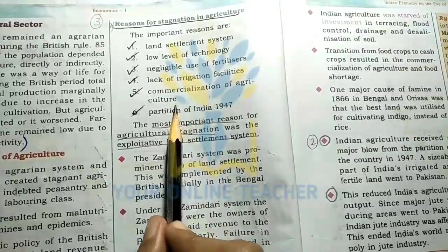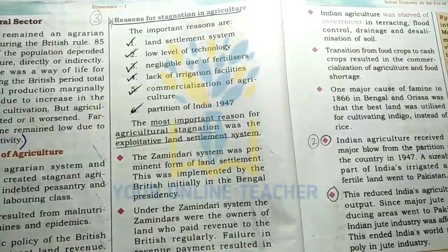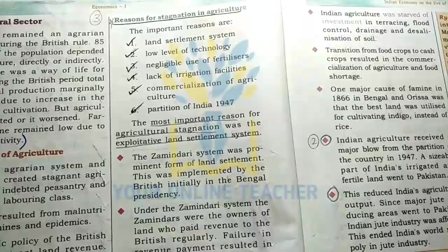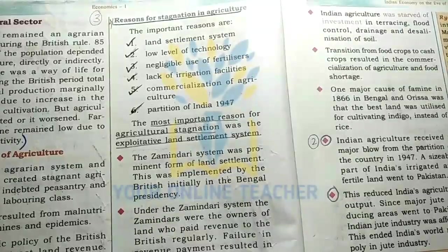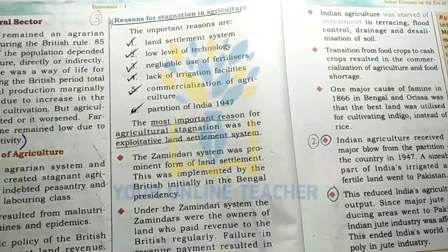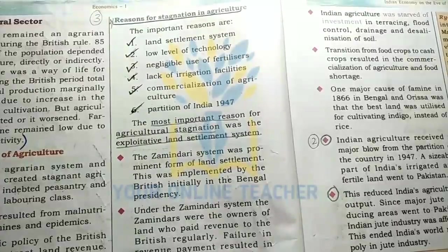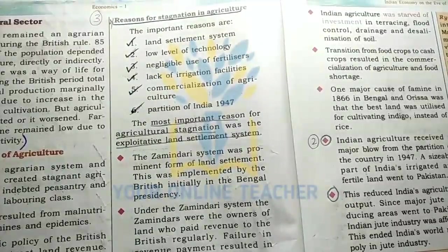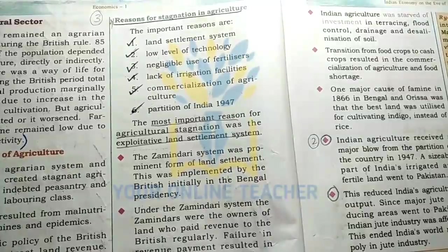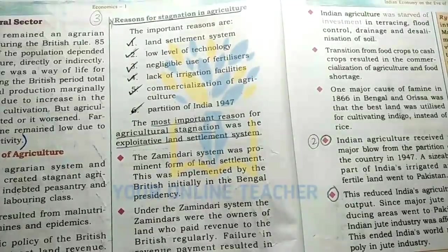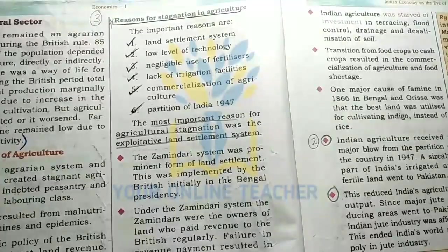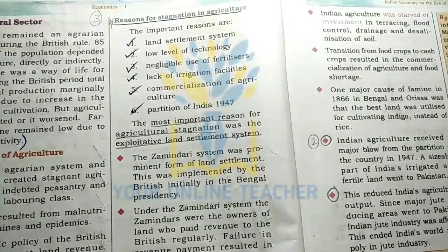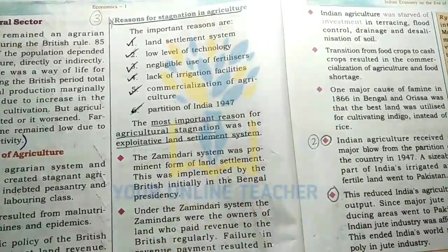Commercialization of agriculture: farmers were shifted from cultivating food crops like rice and wheat to cultivating cash crops such as rubber, cotton, and indigo. This is why agriculture became commercialized, and the partition of India in 1947 also played a role.